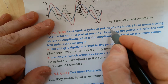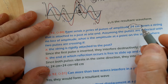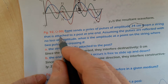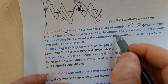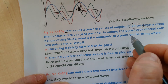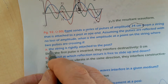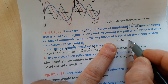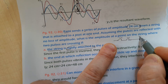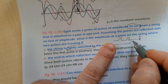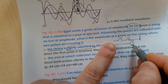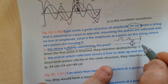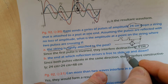Question number thirty: pulses of amplitude 24 cm are sent down a string attached to a post at one end. Assuming no loss of amplitude, what is the amplitude where two pulses cross if the string end is rigidly fixed? At a fixed boundary, the reflected pulse inverts — turns upside down. So the original and reflected pulses vibrate in opposite directions, completely canceling each other. The result is completely destructive interference, and the amplitude at the crossing point is zero.